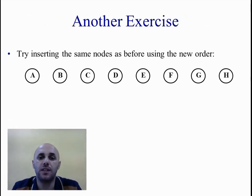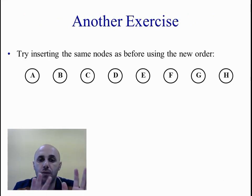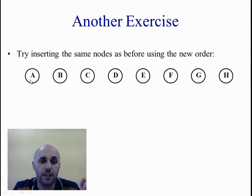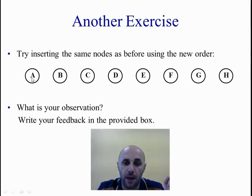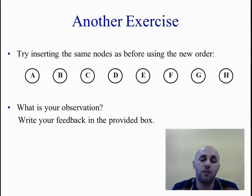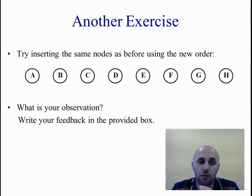Finally, try to insert the same nodes into a binary search tree but following a different order. The order given to you is A, B, C, D, E, F, G and H — go with the alphabetical order, inserting A first, then B, then C, and so on. I need you to submit your observation after finishing inserting both sets of nodes. I will not give you the correct data structure — just tell me what you observe when you insert the given nodes in the given order.